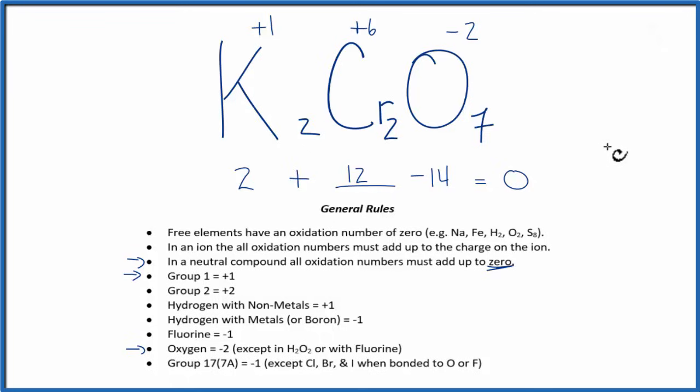This is Dr. B with the oxidation numbers for K2Cr2O7, potassium dichromate. Thanks for watching.